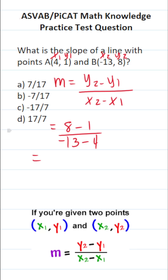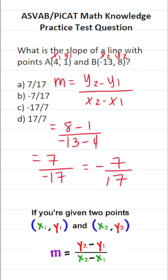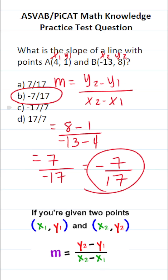This reduces to 8 minus 1, which is 7. Negative 13 minus 4 is going to be negative 17. A positive divided by a negative is going to be a negative, so this is negative 7 over 17. Our slope is negative 7 over 17, which is answer choice B.